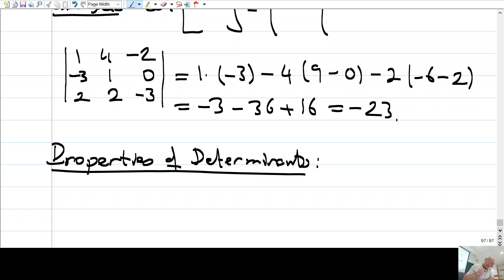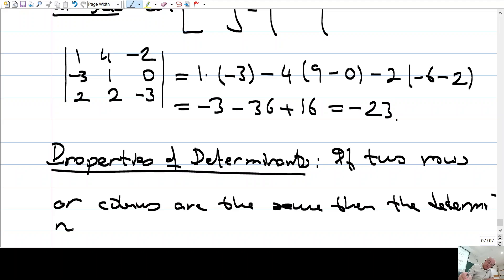Uh, some properties of determinants. If two rows, or columns are the same, then the determinant is 0.